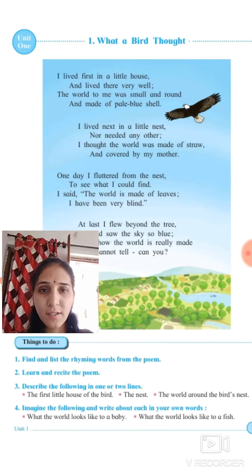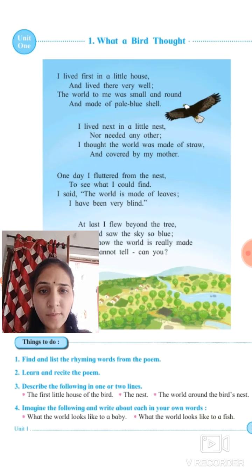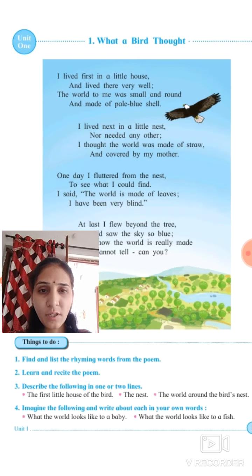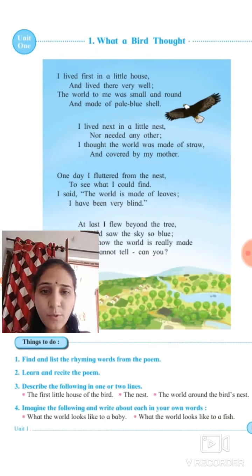See that picture — here one bird is flying. Maha peh ek bird fly ho raha hai. In this whole poem, the various houses of birds are described. Birds ke jo alag-alag houses hain, unke houses kaise change huye hain, yeh hi is poem mein describe kiya gaya hai.